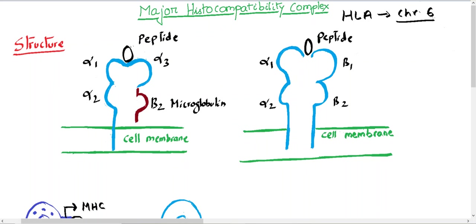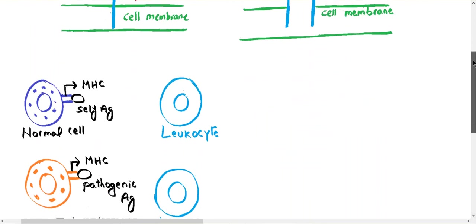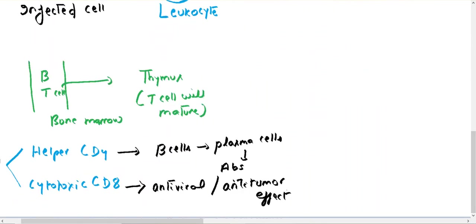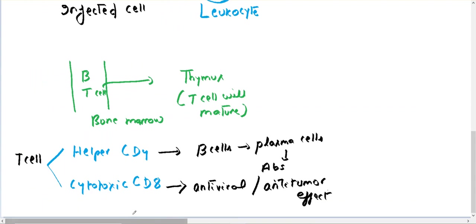The cells of adaptive immunity arise from the bone marrow. B cells mature in the bone marrow, while T cells mature in the thymus, which is located in the anterior mediastinum. The thymus is a lympho-epithelial organ, meaning it contains lymphocytes and epithelial cells. This is where T cells mature. There are different types of T cells involved with MHC.